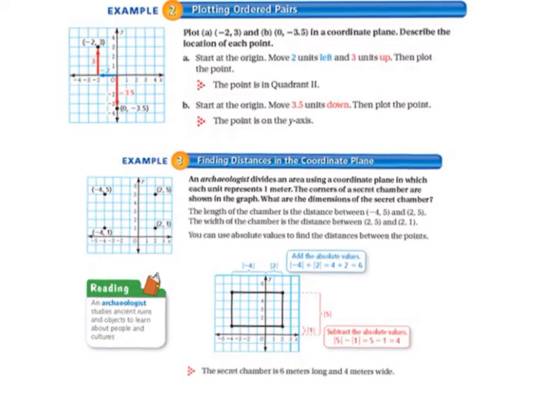Moving on to example 2 on page 277. We're plotting ordered pairs. We're going to plot point A, negative 2, positive 3, and point B, 0, negative 3.5 in a coordinate plane. We describe the location of each point. Letter A, we start at the origin and move 2 units to the left, and then we move 3 units up. So our point is at negative 2, positive 3. So that's where we plot our point. And the point is in quadrant 2.